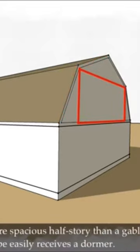The gambrel configuration allows a more spacious half-story than a gable form. Also, the steep initial slope easily receives a dormer.